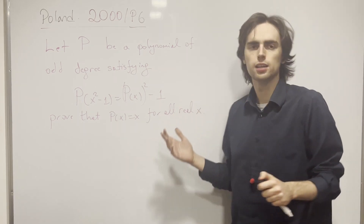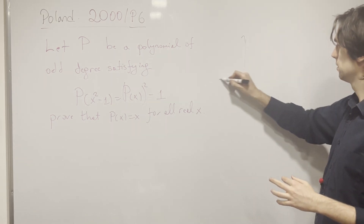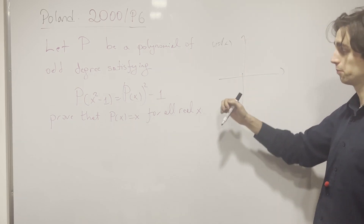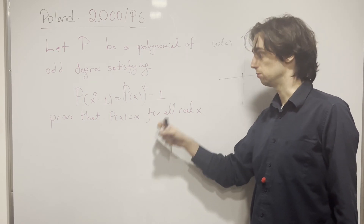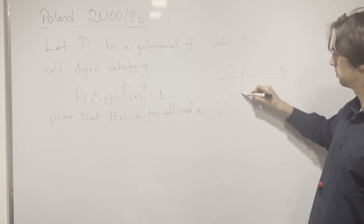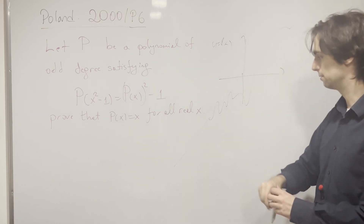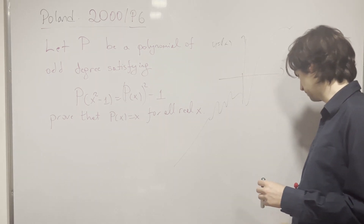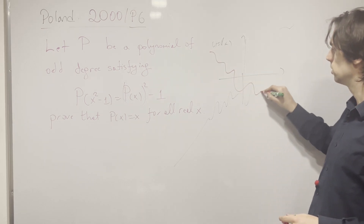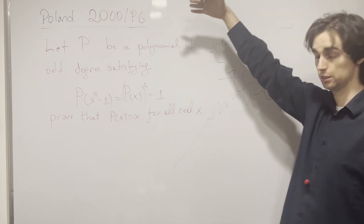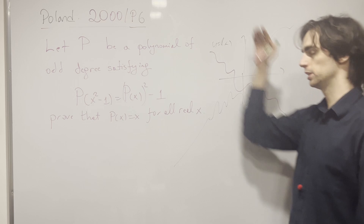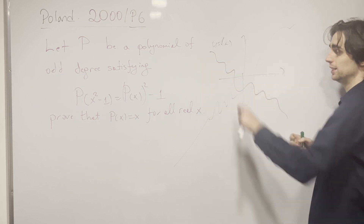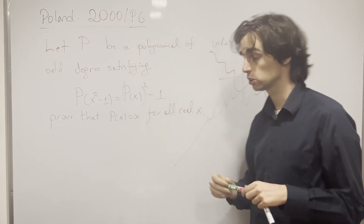That's a thing we know about polynomials of odd degree. Because if you look at its graph — y equals P(x) — if the leading coefficient is positive, the polynomial goes to negative infinity as x goes to negative infinity, and to positive infinity as x goes to positive infinity. Either way, it needs to cross the x-axis, so it has at least one zero.